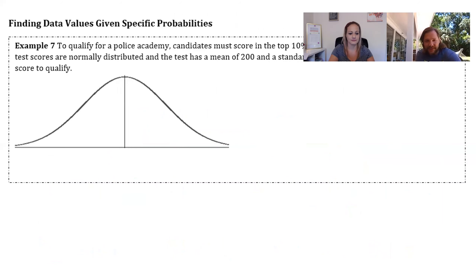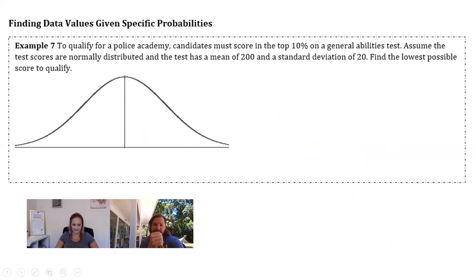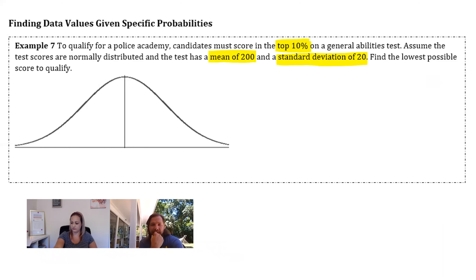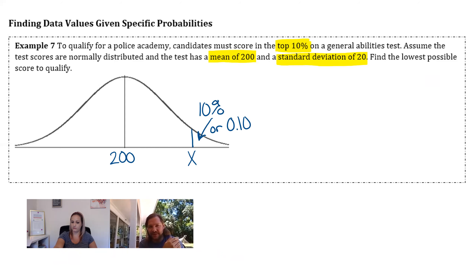Example 7: to qualify for a police academy, candidates must score in the top 10 percent on a general ability test. Assume test scores are normally distributed with a mean of 200 and a standard deviation of 20. Find the lowest possible score to qualify. We need to be in the top 10 percent, so 200 is too low since that's right in the middle. We can figure out the exact cutoff using the methods we just learned.